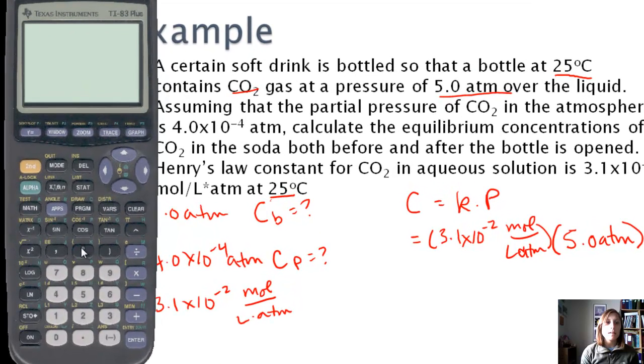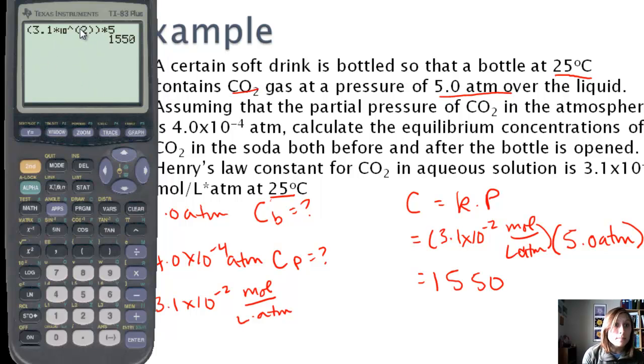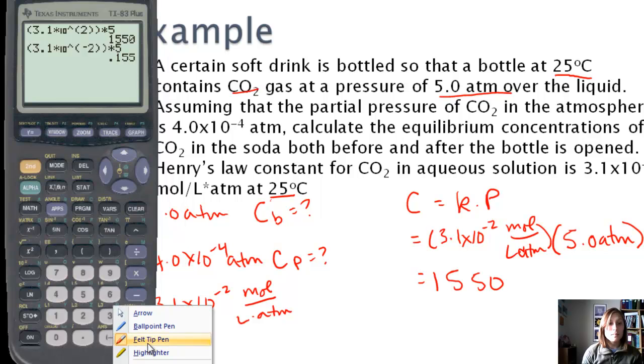So, okay, we're going to take our 3.1 times 10 to the negative 2nd and multiply that by 5. Okay, and so we get 1,550. Oh, I did 2, not negative 2. Big difference there. Oh, let's start over. Okay, 3.1. See, this is why it's important to check your answer, make sure it makes sense. Negative 2, there we go. Okay, now let's multiply by 5. This should be much more reasonable.